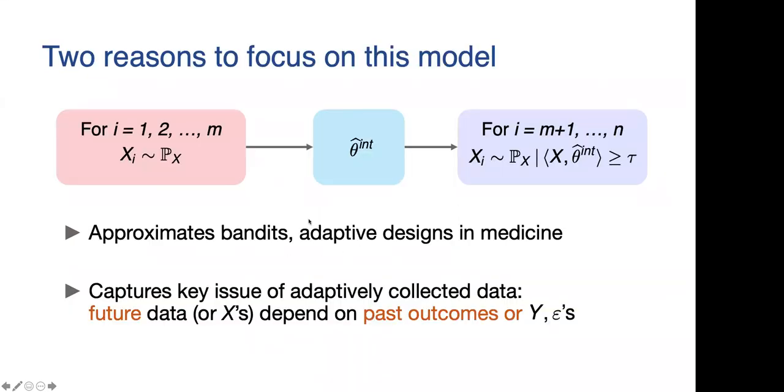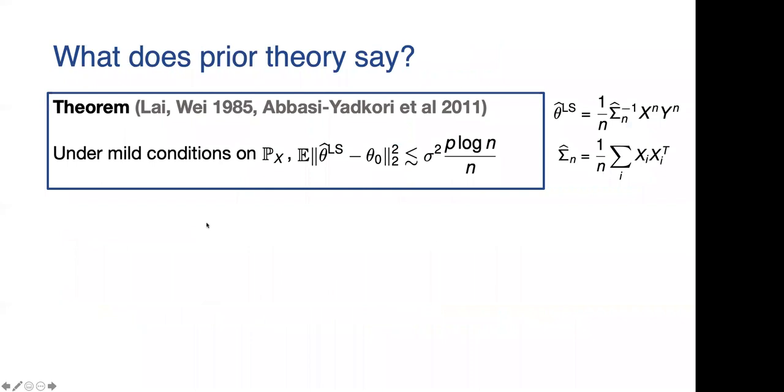There's just sort of one point of adaptivity, which is the point at which you compute this intermediate estimate in the middle, which happens after m data points. I think there's a couple of reasons to focus on this model. One is that it's very simple, but it also approximates sort of well known bandit algorithms and what we think of as adaptive designs that people do in medicine as well. More importantly, I think it captures this key issue of adaptively collected data, which is future data points that we get to see depend on past outcomes. This is the main problem.